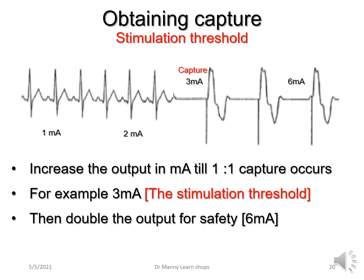Typically the capture threshold is doubled for safety. If capture occurs at three milliamps, you increase the output to six milliamps. If it was one milliamp, increase to two; if two, increase to four — as a safety feature in case something changes and you get failure to capture. So for the stimulation threshold, you increase the output in milliamps until you get one-to-one capture, then double the output for safety.